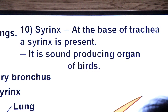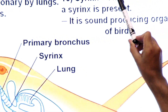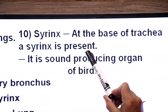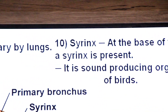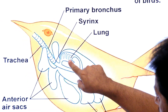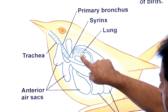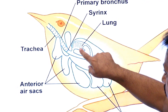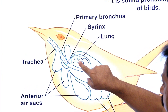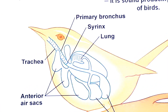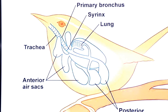At the base of the trachea, a syrinx is present — the sound-producing organ of birds. In the lungs, there are channels called parabronchi, which are the sites of gaseous exchange. In humans, gaseous exchange occurs in alveoli; in birds, it occurs in parabronchi. These channels are open at both ends and allow continuous, one-way flow of air.